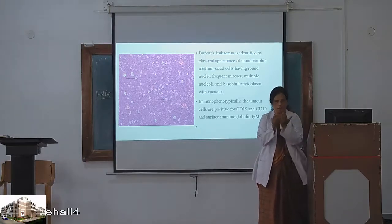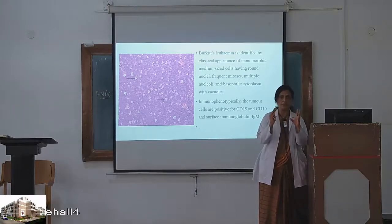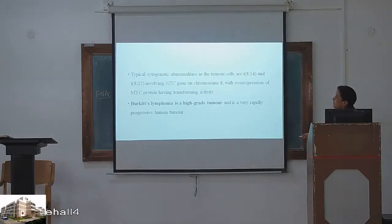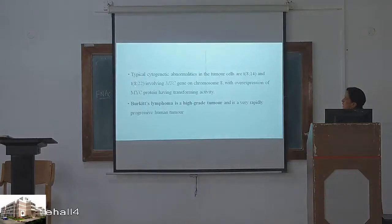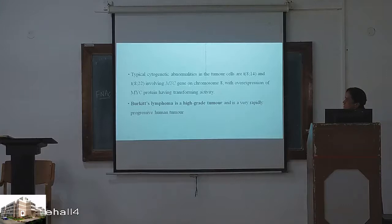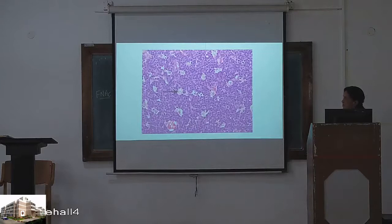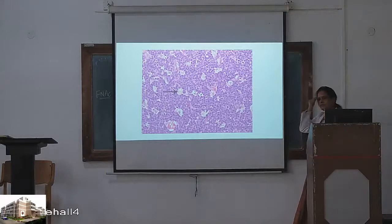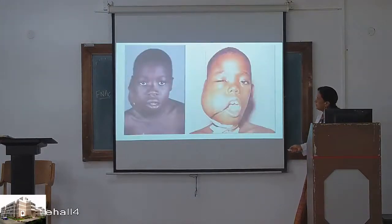The starry sky appearance of Burkitt's lymphoma: the background has many monotonous, highly mitotic lymphocytes — making it appear like a blue sky — and interspersed macrophages called tingible body macrophages appear like stars. Burkitt's lymphoma is identified by monomorphic medium-sized cells with round nuclei, frequent mitosis, multiple nucleoli, and interspersed macrophages. There is a characteristic chromosomal translocation of 8 to 14, and 8 to 22, involving the MYC gene on chromosome 8.